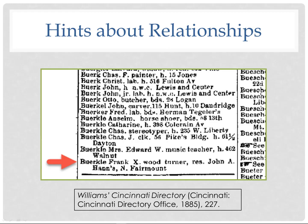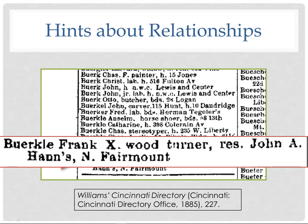Here I find my Frank X. Berkla, a woodturner, but in 1885 he's residing with John A. Hahn and living at a different address in a different part of town. This gives me a hint that there may be some relationship between Frank and John — and it turns out John was Frank's son-in-law. Look for these kinds of hints in city directories and track down the people your ancestor may be living with.